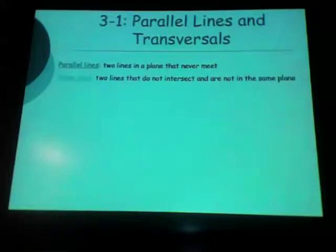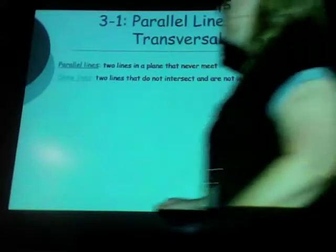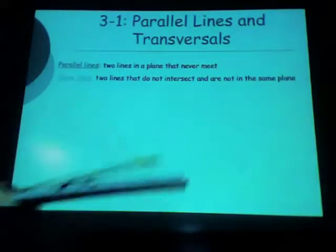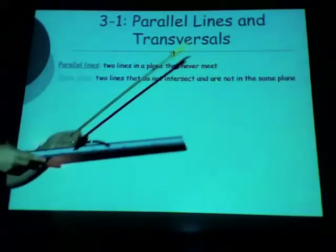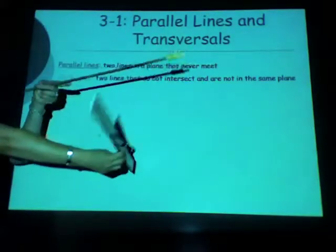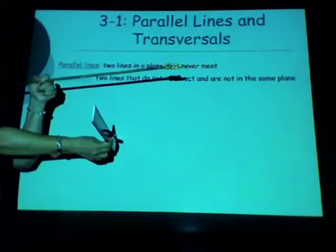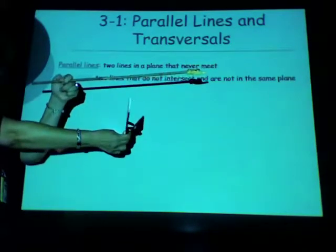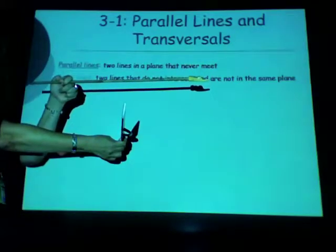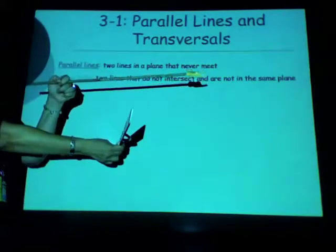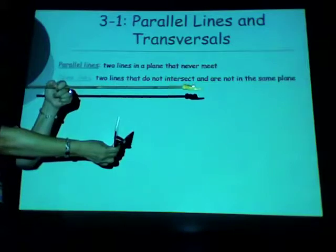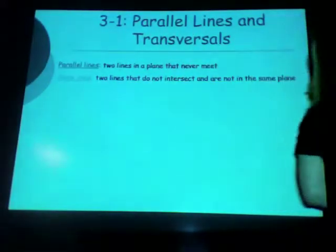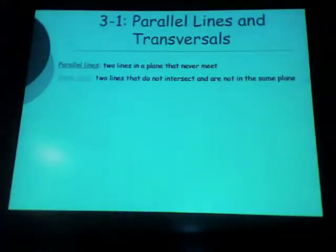Skew lines are also two lines that don't intersect, but they're not in the same plane. These would be an example of two lines in the same plane that don't intersect. To make them skew, all I have to do is turn one in the opposite direction. Is there any way I could possibly make a plane that both of these would be in? These lines will never intersect either. They're not considered parallel. They're called skew. Skew lines, similar to parallel lines, also don't intersect, but they're in different planes.